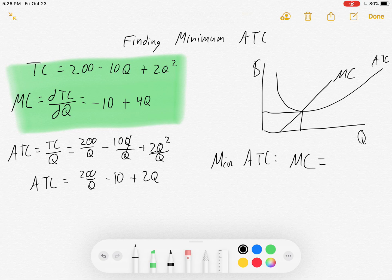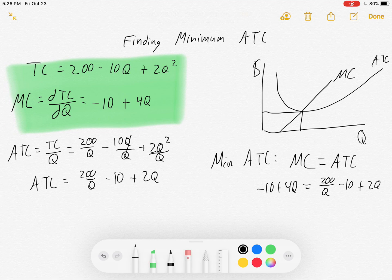we set our marginal cost equal to the average total cost. So, minus 10 plus 4Q is equal to 200 over Q minus 10 plus 2Q. The 10s cancel out, because you could just add 10 to both sides. I'll subtract 2Q from both sides, get 2Q equals 200 over Q.